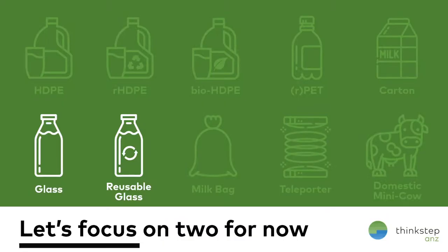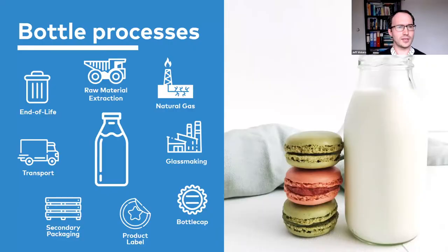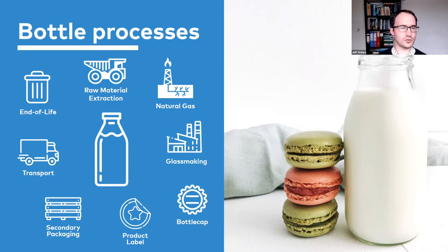Today I want to focus in on two of those options. Teleportation and domestic mini cow would be hard to quantify through the Garbi packaging calculator, so we'll focus on two more realistic ones — particularly single use glass and reusable glass. If we're looking at glass as a material type, we need to look at all the stages associated with making it: extracting materials, heat for glass production, producing a cap and label, secondary packaging to transport bottles to filling, and then transport to the store. And at some point the glass bottle reaches end of life, either after a single use or after multiple uses.